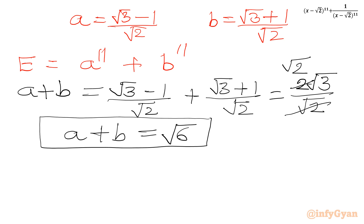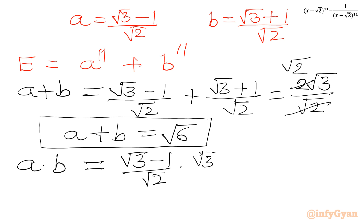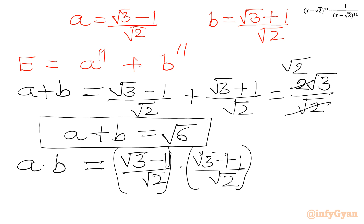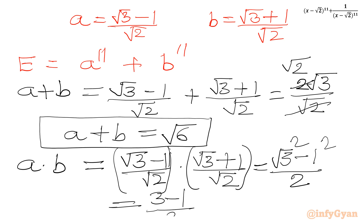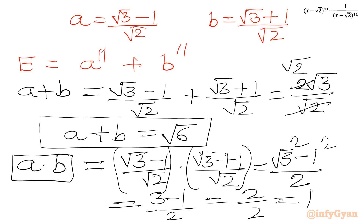Now I will find the product a times b: (root 3 - 1)/root 2 times (root 3 + 1)/root 2. The numerator is (root 3 squared minus 1 squared) and the denominator is root 2 squared, giving (3 - 1) over 2, which equals 2 over 2 equals 1. So our two key equations are: a plus b equals root 6, and a times b equals 1.